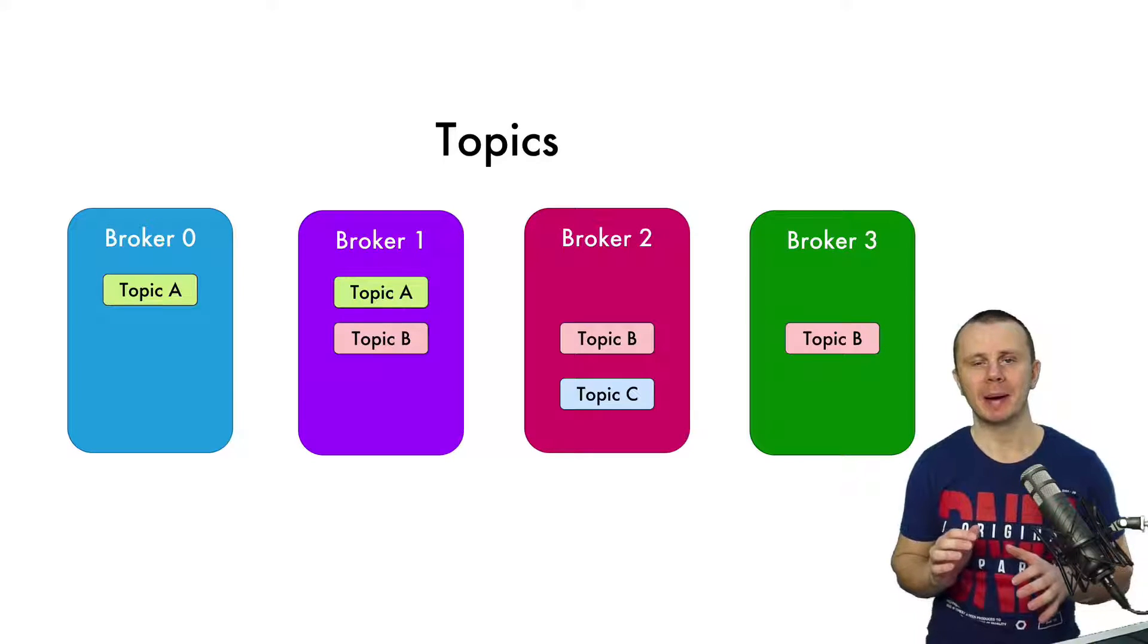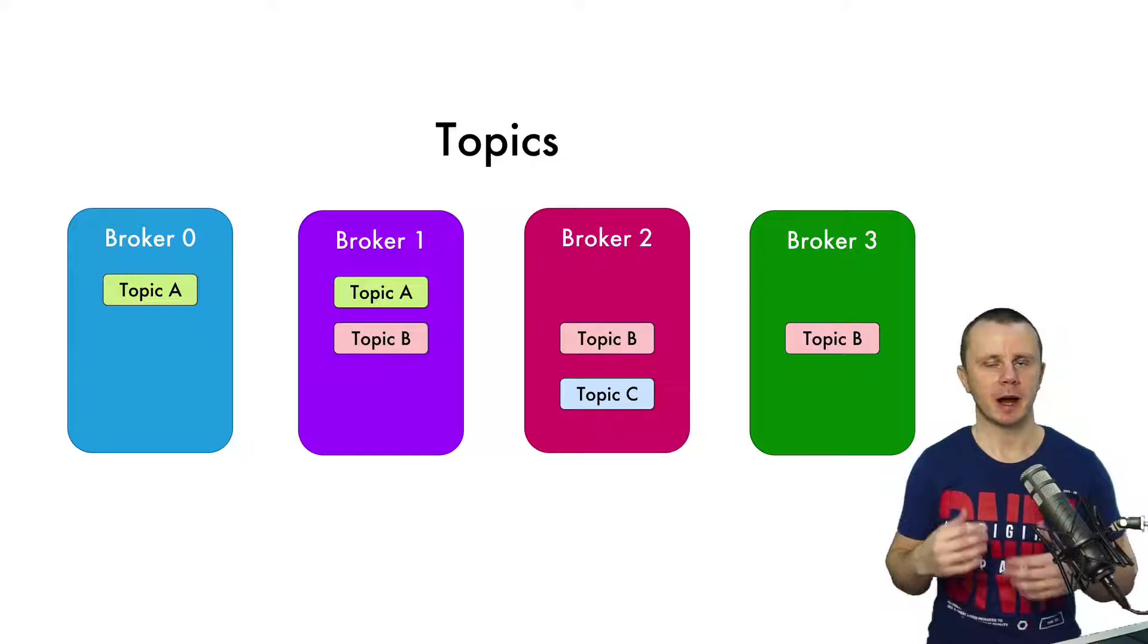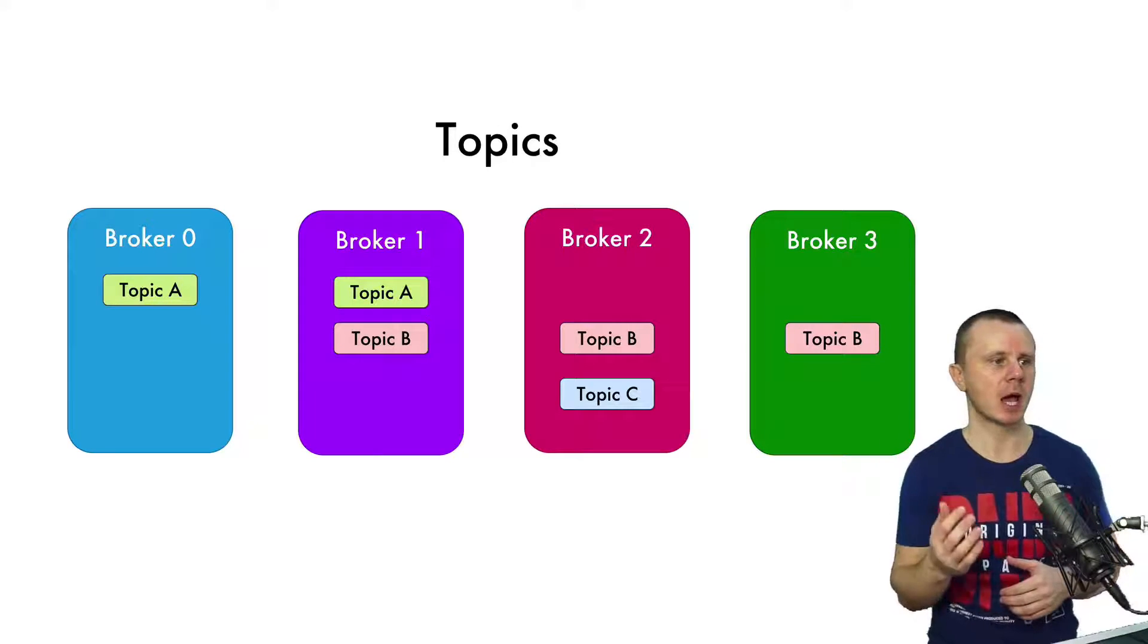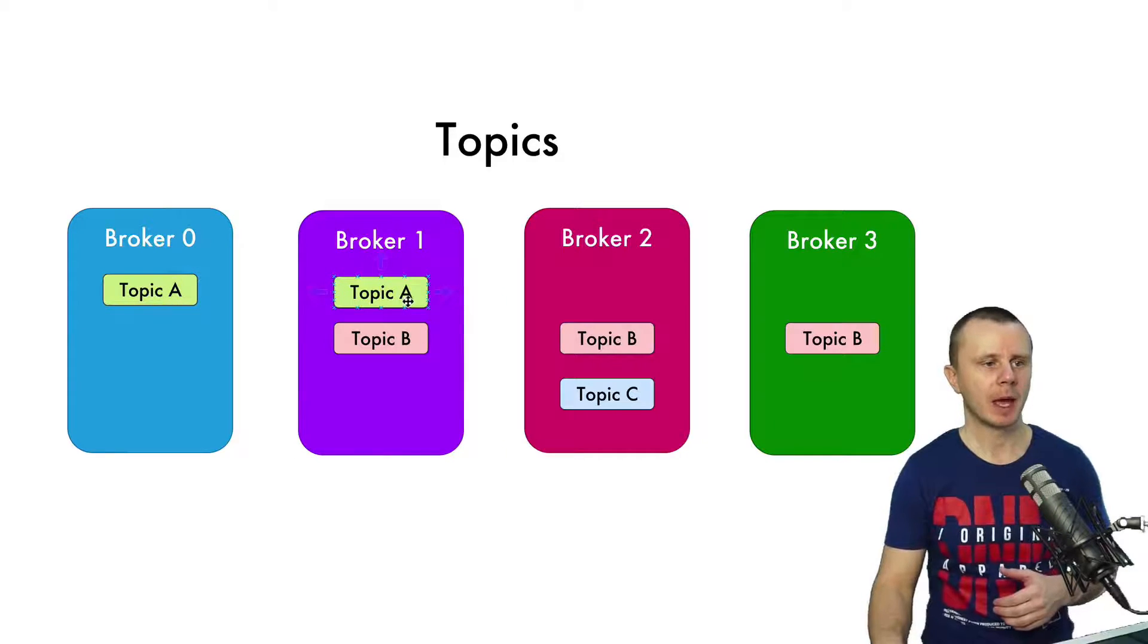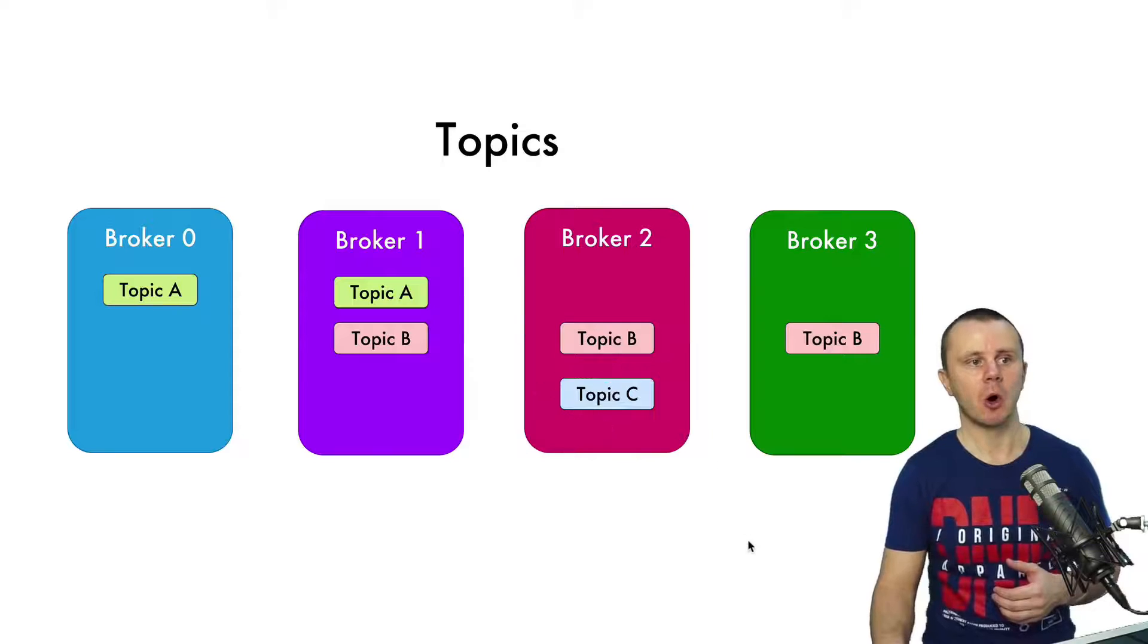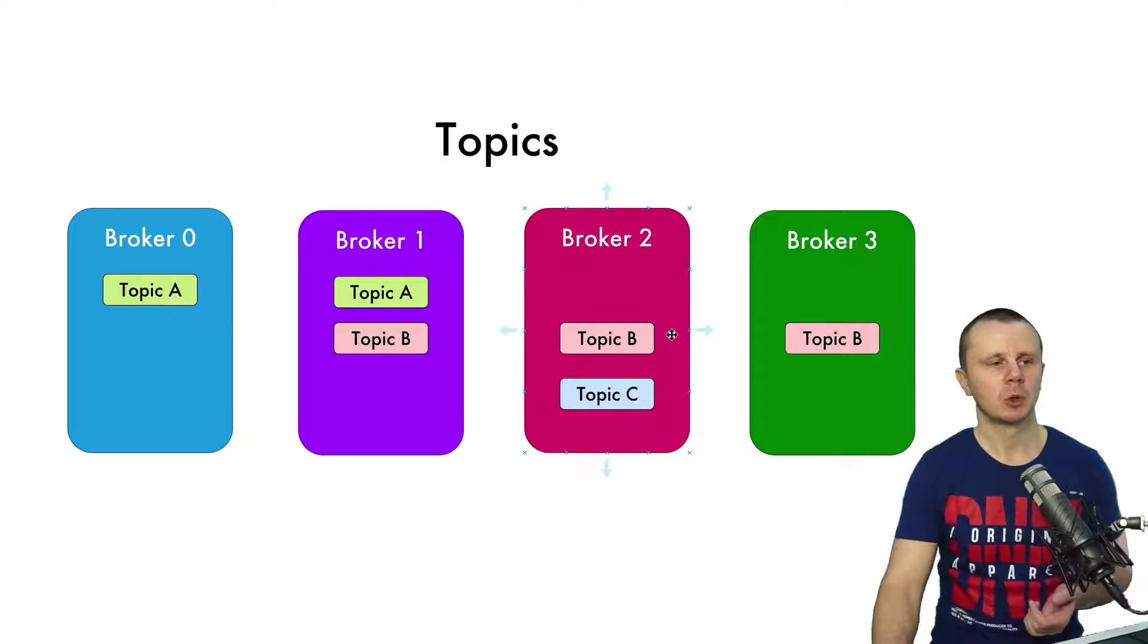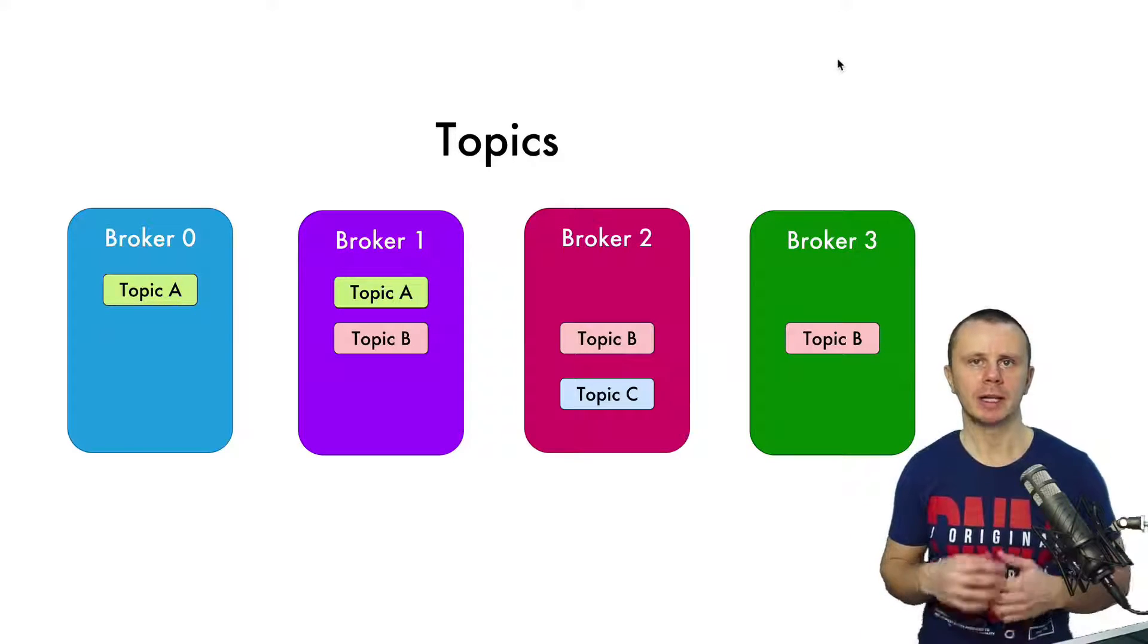So every topic may exist on different brokers that are included in a Kafka cluster. For example, here on this diagram you see that Topic A is present at broker 0 and at broker 1, and Topic B is present on broker 1, broker 2, and broker 3. Another topic, Topic C, is present only at broker 2. Notice that on this diagram I have removed Zookeeper for simplicity, but it is always there.